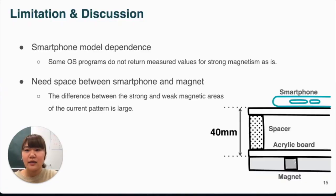Finally, there are limitations and considerations. In this study, we implemented and evaluated the system using only one type of smartphone. However, due to the different characteristics and operating programs of magnetic sensors installed in smartphones, the operations of the magnetic sensors may differ depending on the model.